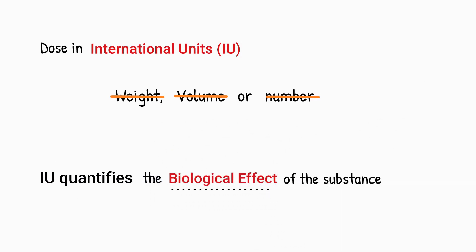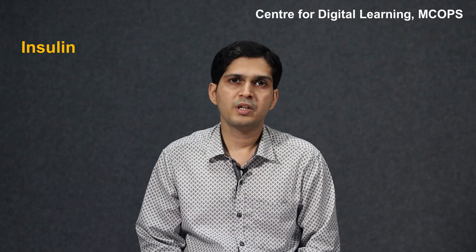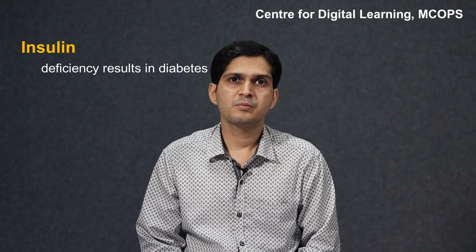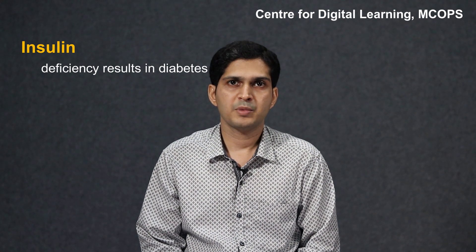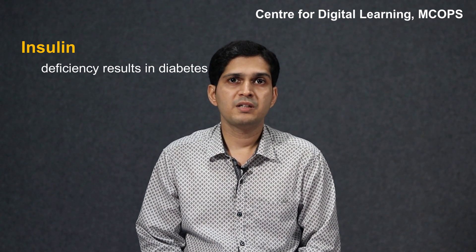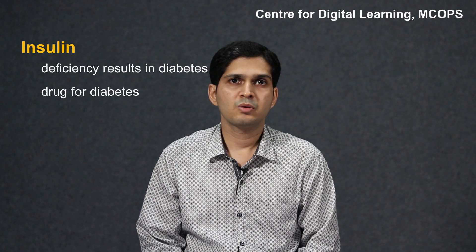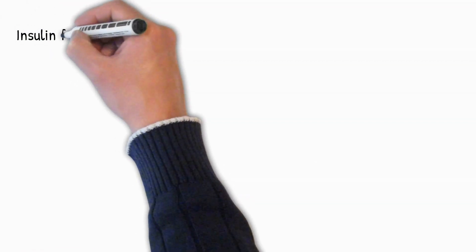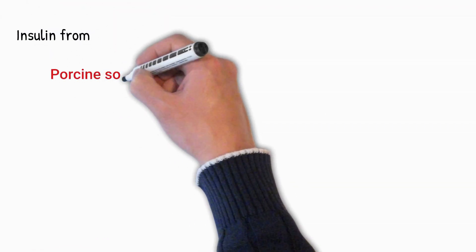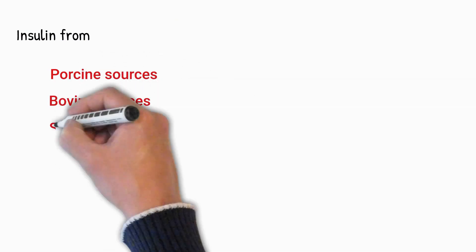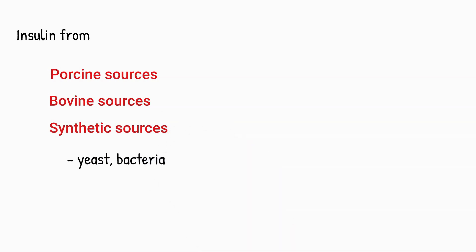Let me explain this with the help of an example — the hormone insulin. As you all know, insulin is a protein whose deficiency results in increased blood sugar levels and diabetes. Therefore, insulin can be injected as a drug for replacement therapy to control the condition. For replacement therapy, insulin isolated and purified from pigs, cows, and synthetically obtained from yeast and bacteria using recombinant DNA technology are used.